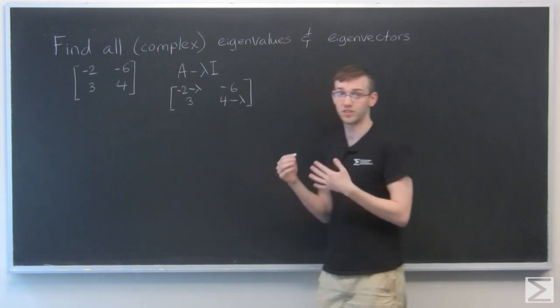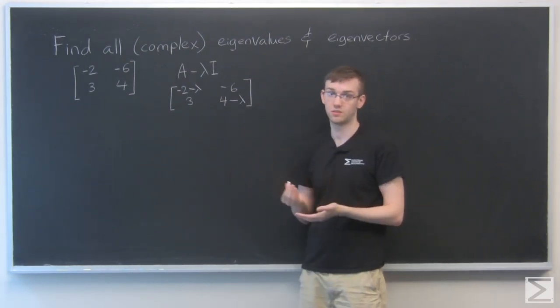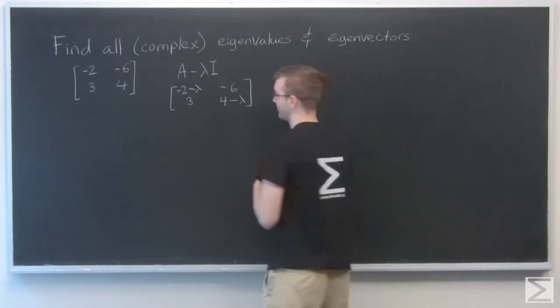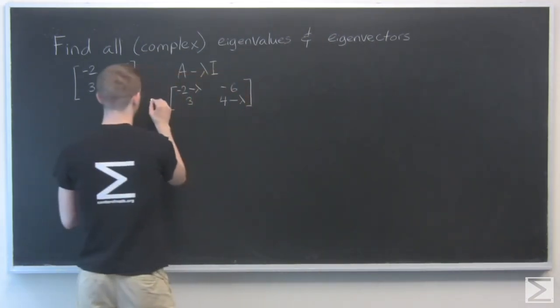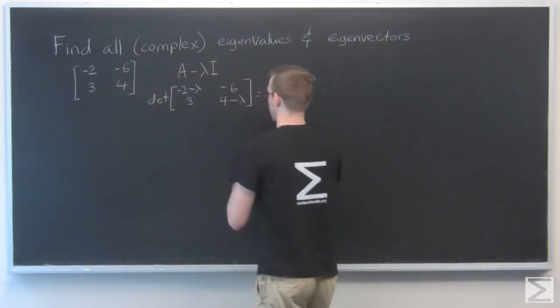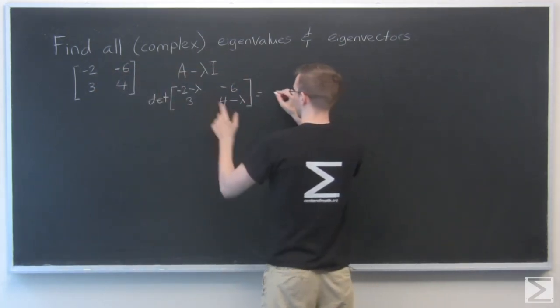And then if you remember, we take the derivative of this... I mean, determinant. So the determinant of this is going to be cross multiply.